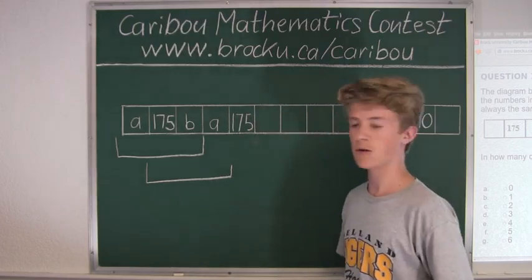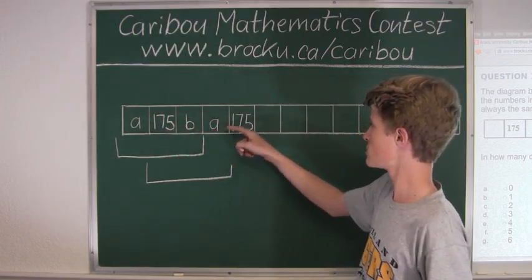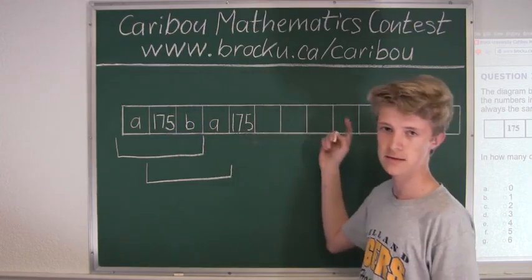So as you can see, now it is just a cycle. We have A, 175, B, A, 175, and then B, and so on.